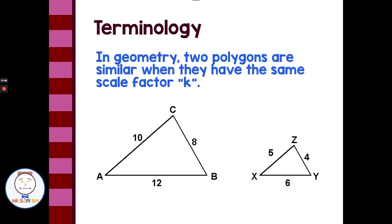Similar Triangles. We'll start with a little terminology. In geometry, two polygons are similar when they have the same scale factor and the same measure of angles — we're looking for a ratio that's the same. For example, if the side that's 10 on line segment AC corresponds with 5, then half of 10 is 5, dividing by 2, or multiplying by one-half for a scale factor.